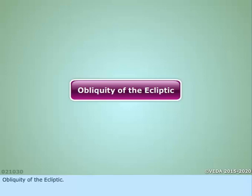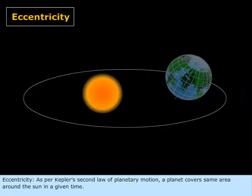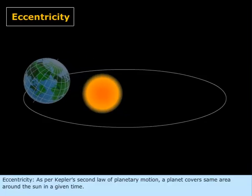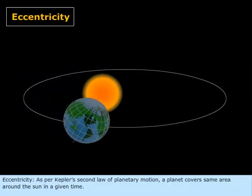Obliquity of the ecliptic. Eccentricity: As per Kepler's second law of planetary motion, a planet covers same area around the Sun in a given time.